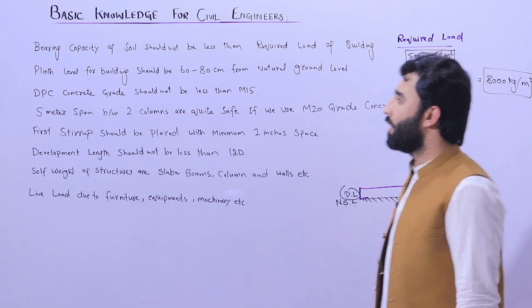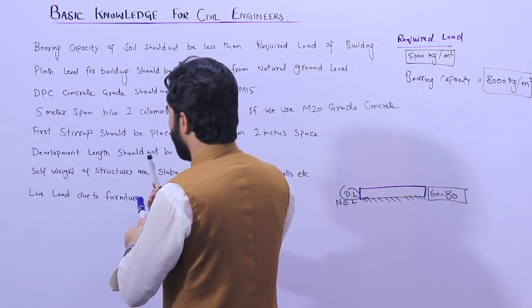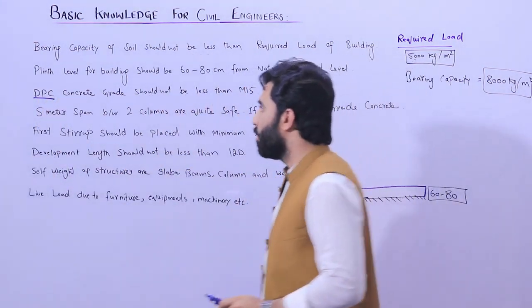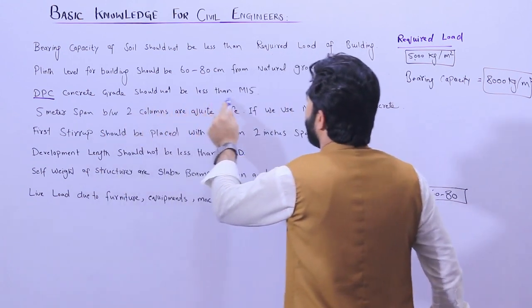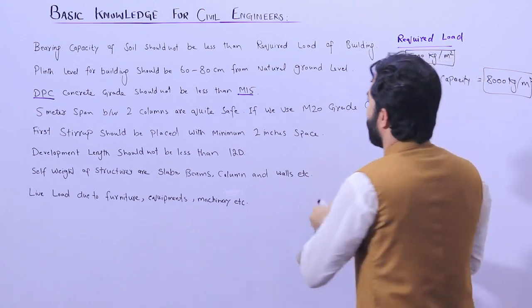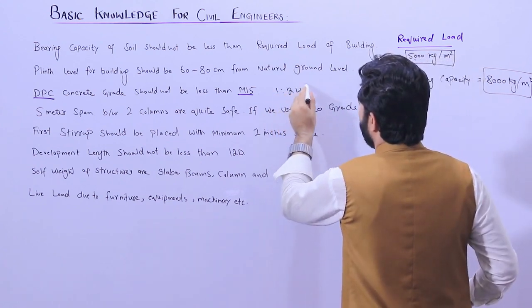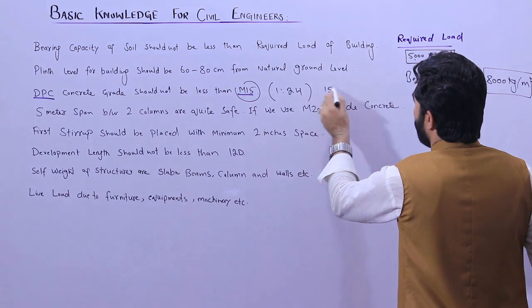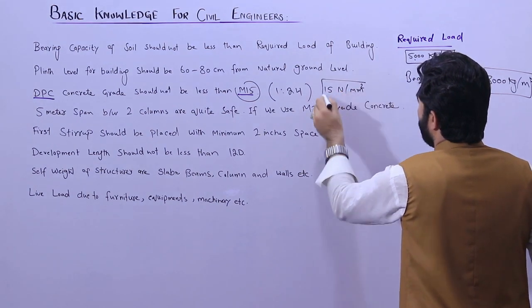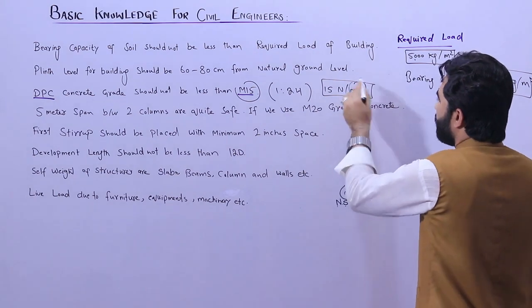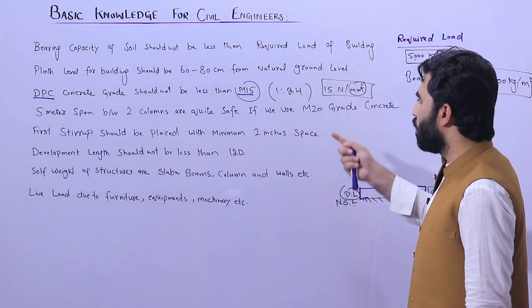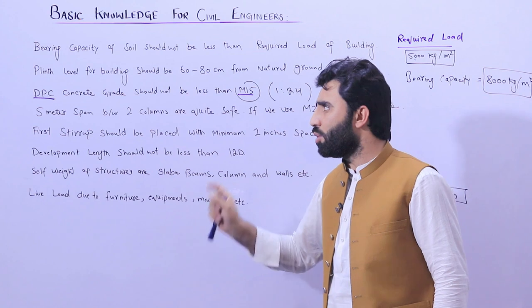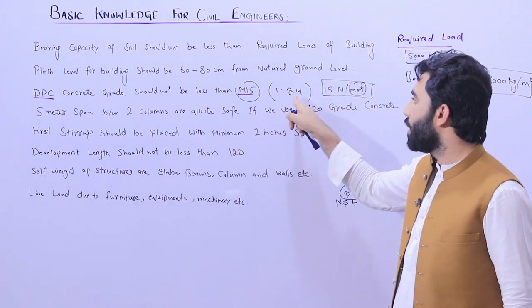The next topic is DPC — Damp Proof Course — which we provide on top of the brick masonry or on top of the plinth level. The DPC concrete grade should not be less than M15 grade concrete, where M15 grade concrete ratio is 1:2:4. M15 means 15 Newton per mm² compressive strength. If you are using M20, it means 20 Newton per mm². For normal DPC, you can use M15 grade as discussed.